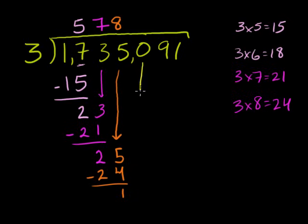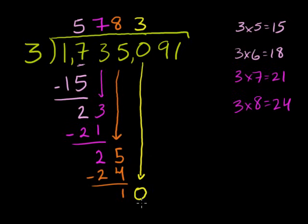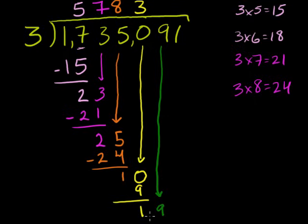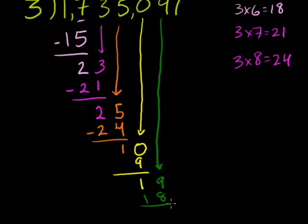Now bring down this 0, and you get 10. 3 goes into 10 how many times? That's easy — 3 times. 3 times 3 is 9, which is as close to 10 as we can get. 10 minus 9 is 1. Then bring down that 9. 3 goes into 19 how many times? 6 is about as close as we can get — 3 times 6 is 18. So 3 goes into 19, 6 times. 6 times 3 is 18. 19 minus 18 is 1.